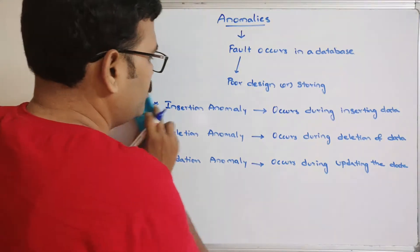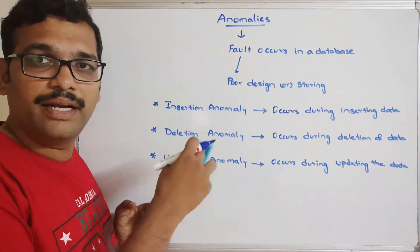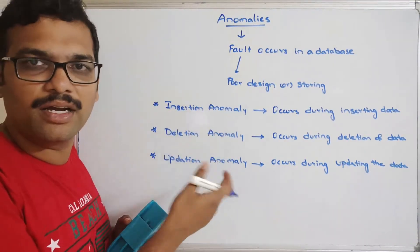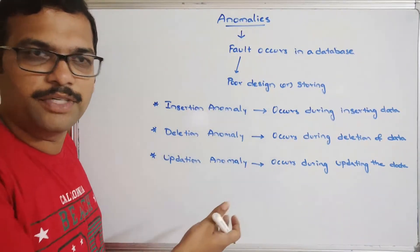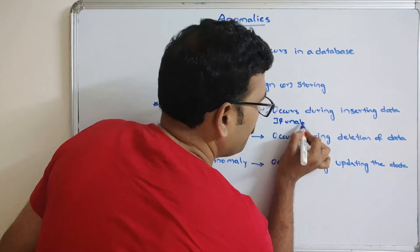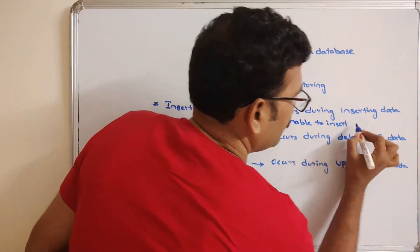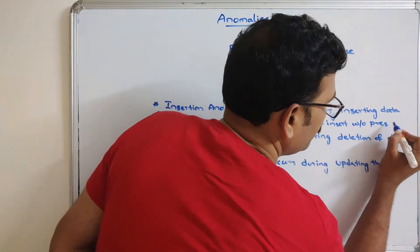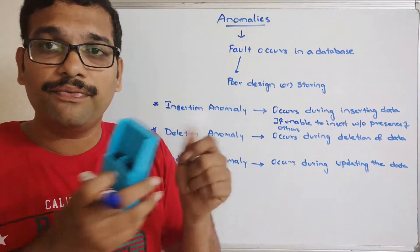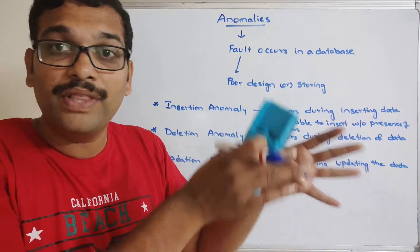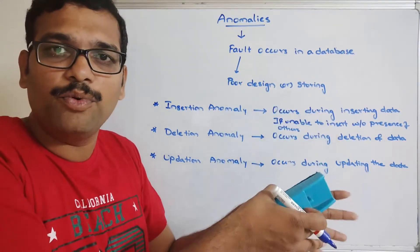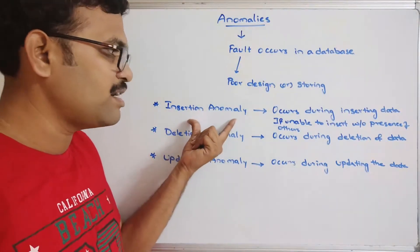Now let's go through insertion anomaly theoretically, after which I'll show you an example using a table. Insertion anomaly means that while inserting data, you are unable to insert data for a particular attribute without the presence of another attribute — that is, one attribute is dependent on another.